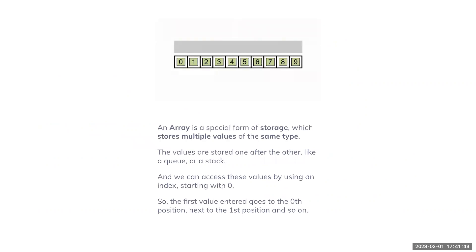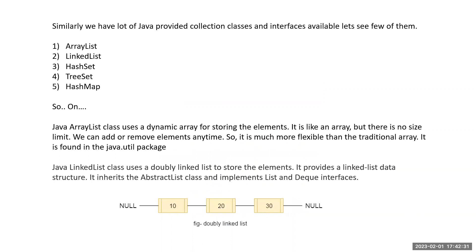An array is a special form of storage that stores multiple values of the same type. These values are stored one after another, like a queue or a stack, and each value has its own index. The index starts at zero, so the first value goes to position zero. As you keep adding values, the index size increases. For example, you can see zero to nine on screen, meaning we can store around 10 elements.